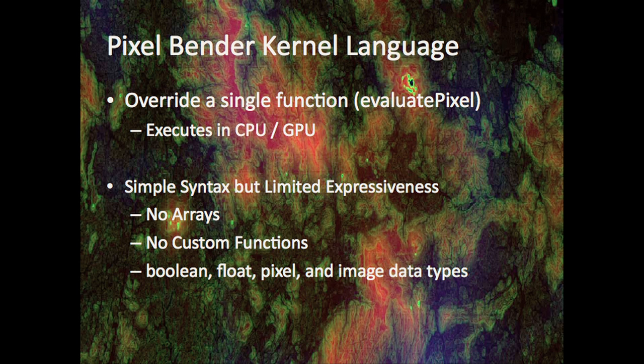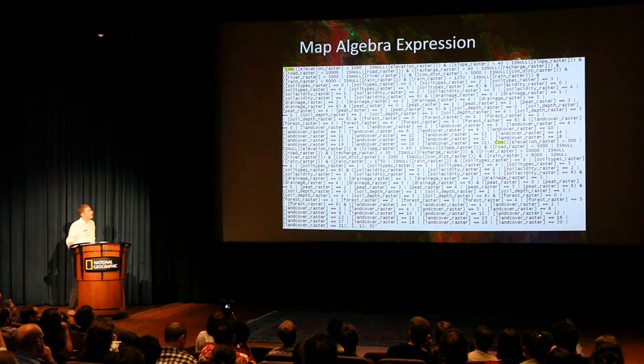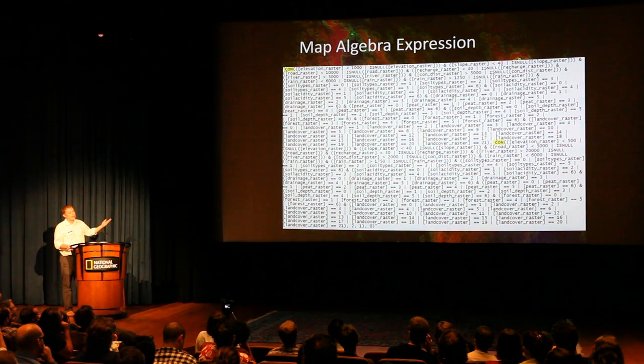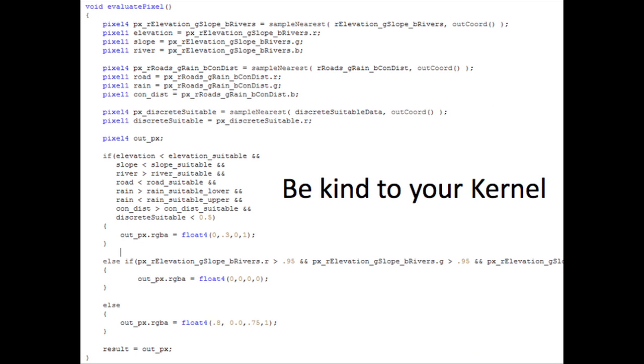The PixelBender kernel language is very simple but limited in expressiveness — no arrays, just Booleans and very simple types. But it's super fast and executes in parallel. The type of logic you put in there is just like map algebra — basic logical operations on pixels looking at their values once you've translated them. This is a long map algebra expression, which is what I'm actually doing on the server. On the client, this is what the kernel looks like. Be kind to your kernel — don't put too much logic in these things. If you put too much logic like it's a scripting language, you're going to completely fry the processor. It will just hit 100% and flatline.